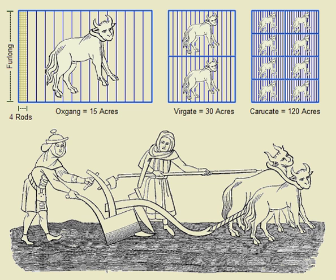In the United States, both the International Acre and the U.S. Survey Acre are in use, but they differ by only two parts per million.